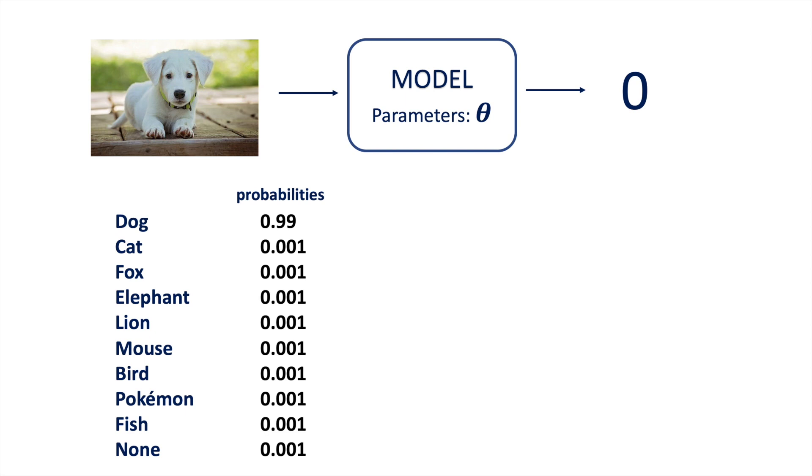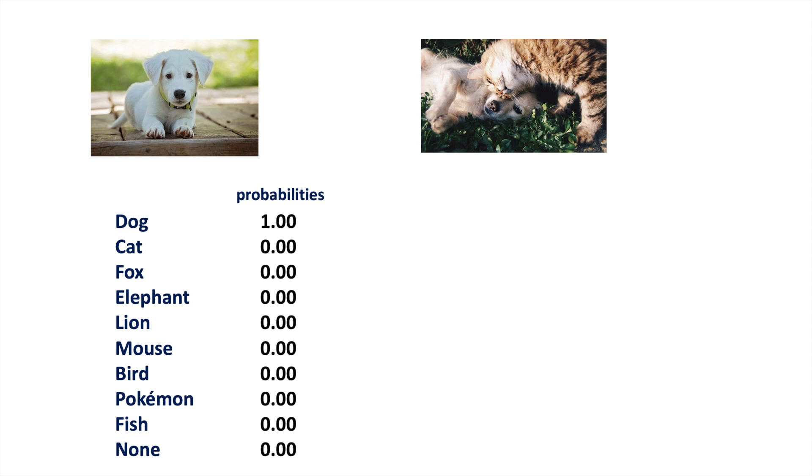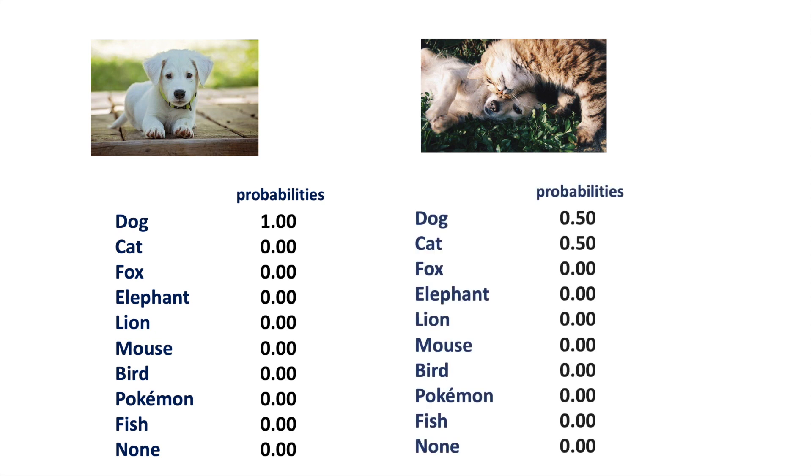If we are certain that an image is of a given class, we can still assign a probability of 100% to that class and 0% to all the other classes. But if given an ambiguous image where the image could be assigned to different classes, then representing our predictions as a probability distribution gives us a solid framework to still convey maximum information.